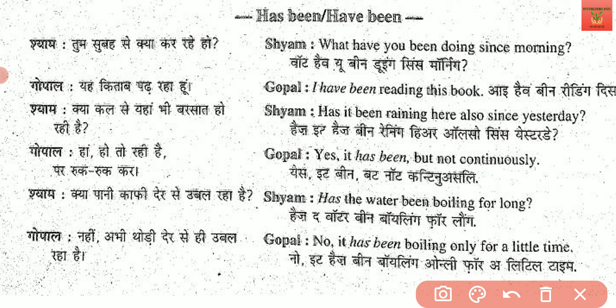Kya kal se yahan bhi barsat ho rahi hai? — Has it been raining here also since yesterday? Yes, it has been, but not continuous — ruk ruk kar — meaning not non-stop. Kya paani kaafi der se ubal raha hai? 'Ubalna' means to boil. Has the water been boiling for long? No, it has been boiling only for a little time.